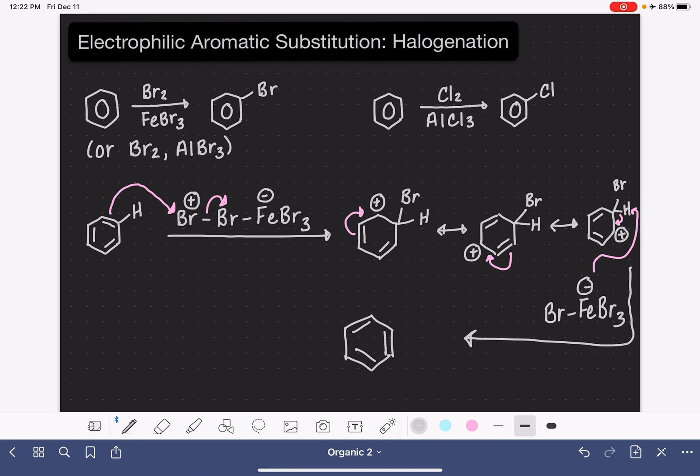Now normally, when we're drawing these halogenation reactions, in this step right here, we simplify by just writing the Br plus ion or the Cl plus ion, just using that reagent.